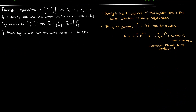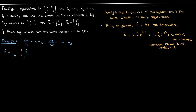Let's apply these principles and solve another example. We'll analyze the solution and sketch its phase portrait. Consider the dynamical system given by two differential equations. Written in matrix form, this is what it looks like. Recall that the eigenvalues λ and eigenvectors V of matrix A satisfy the equation A·V = λ·V.